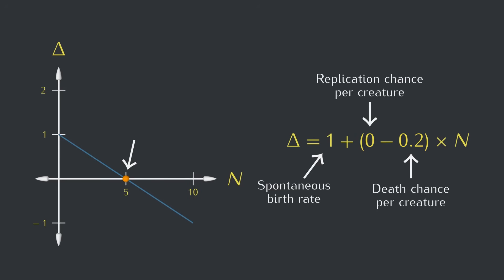Notice this point here where delta is equal to 0, that's our old friend the equilibrium point from before. At that point, which is 5 creatures in this case, we don't expect any change on average. If the number of creatures goes below 5, we'll then expect a positive change at the next time step, pushing the population back toward 5.